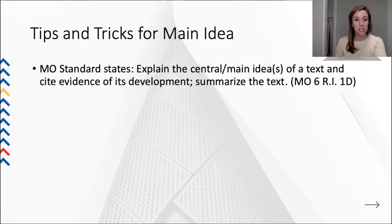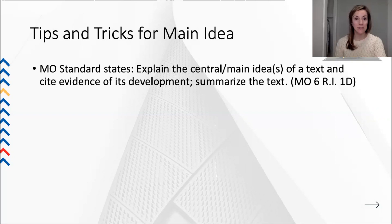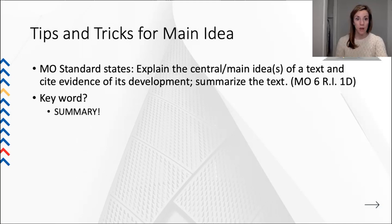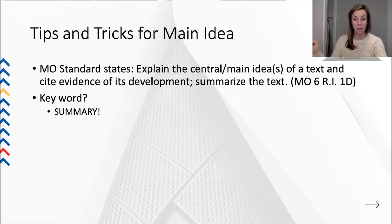First of all, it's always good to look at what the Missouri standard states. For 6th grade — and there's an equivalent for 5th — it's asking you to explain the central or main ideas of a text and cite evidence of its development, and to summarize the text. The key word in the standard, and the key word you should think of when asked to find the main idea, is summary. What sentence or two could you state that summarizes a passage you've just read? So main idea equals summary.